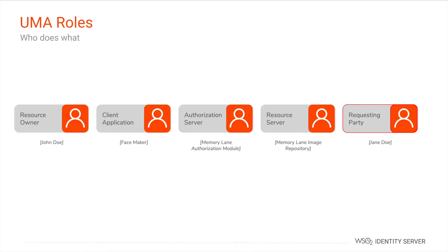UMA has five types of roles: resource owner, client application, authorization server, resource server, and requesting party. The resource owner holds a user account in an application and owns certain resources stored in that application. For example, John Doe has a user account in the photo storage application called Memory Lane. In some cases, the resource owner can also be a non-human entity treated as a person for limited legal purposes, such as a corporation. The client application is a web or mobile application that can access your resources on your behalf.